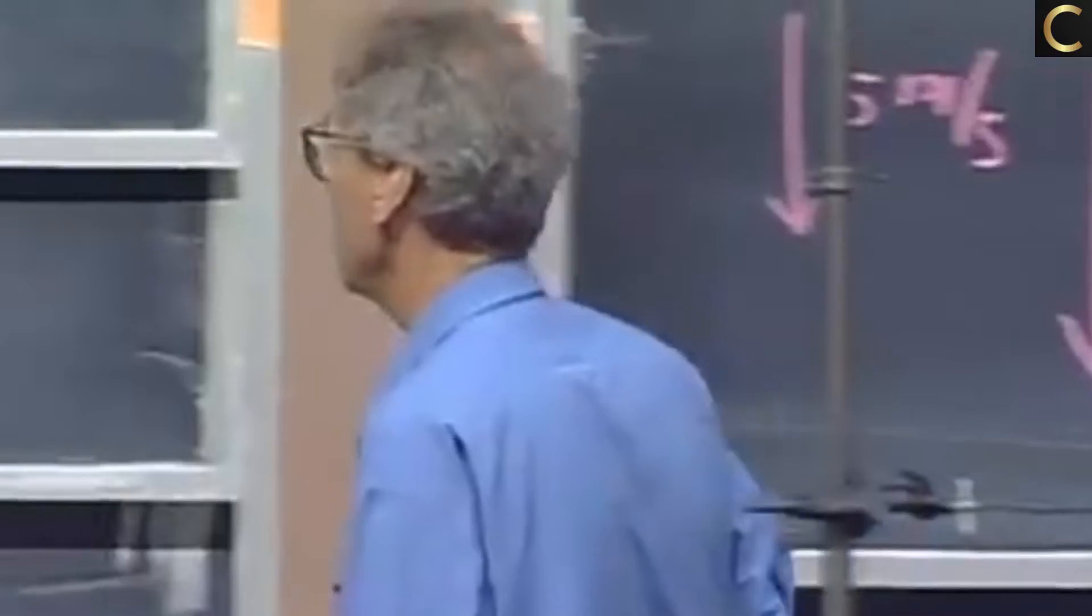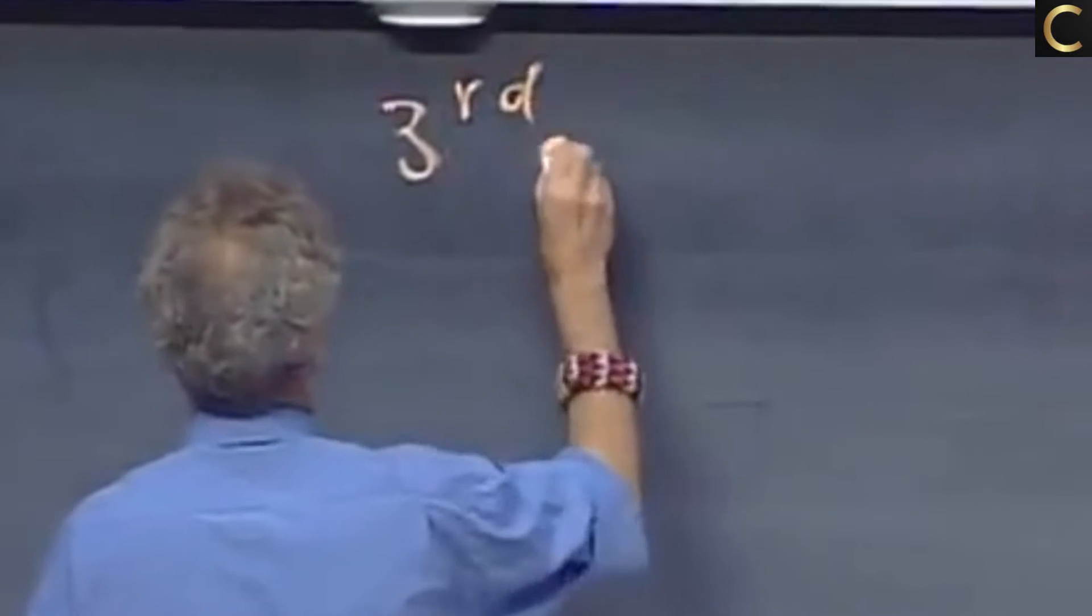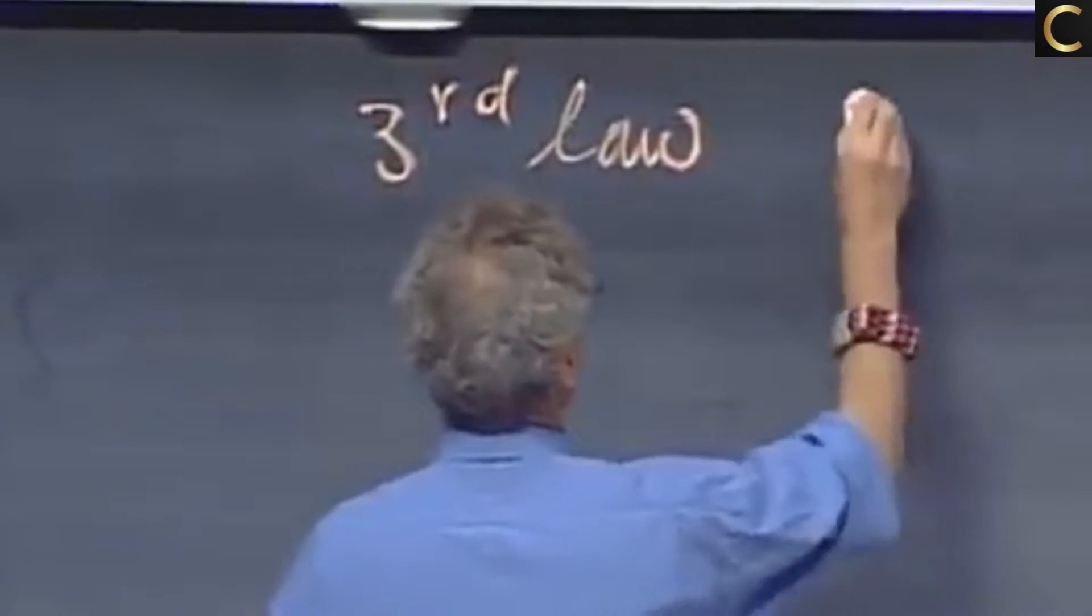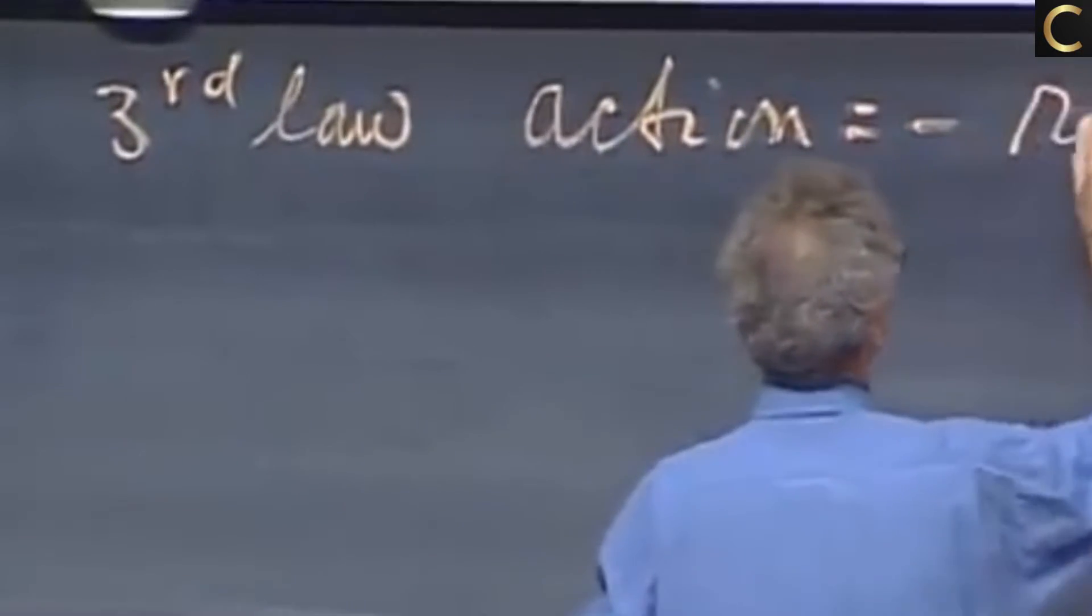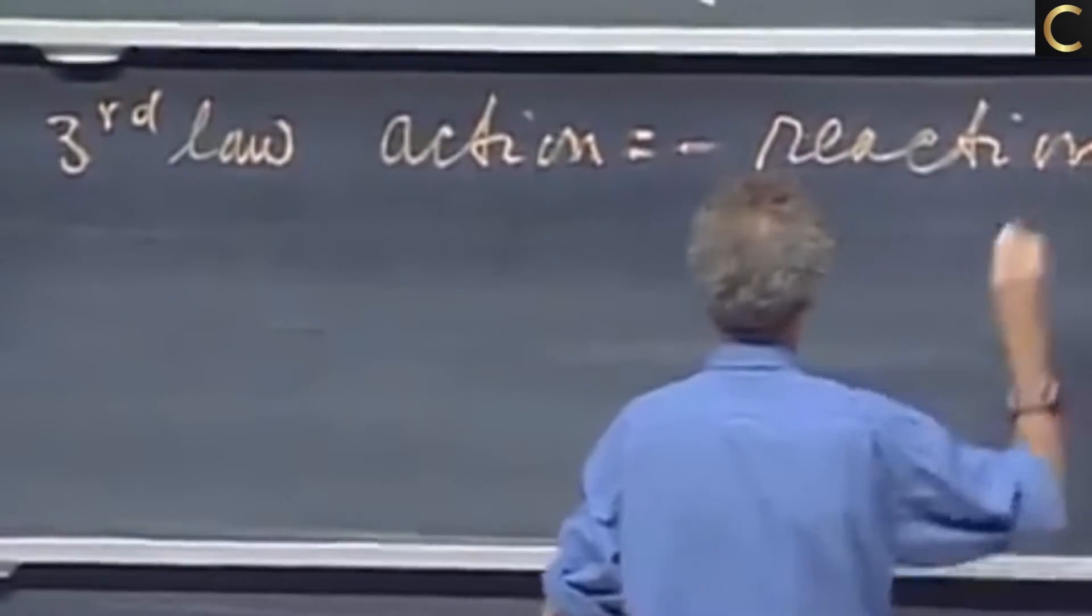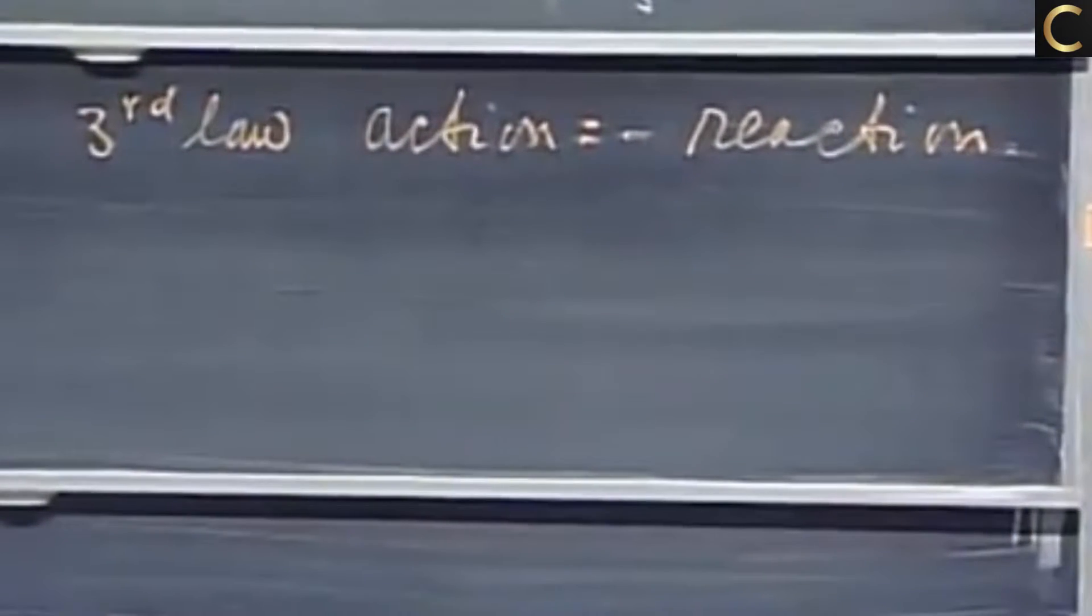And I normally summarize that as follows: the third law as action equals minus reaction. And the minus sign indicates that it opposes.